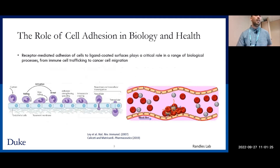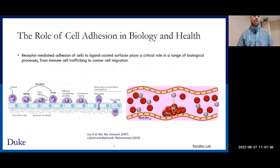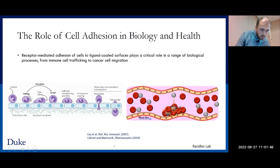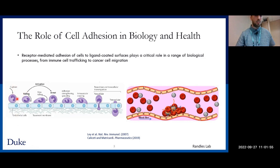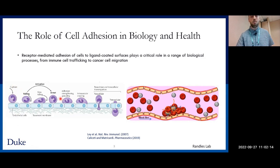Before I get into the meat of the presentation, I want to give a high level overview of some of the biological processes relevant to this work, mainly a process called cell adhesion. This is a process in which biological cells form mechanical connections with a substrate or surface. This single cell has proteins on its surface called ligands that interact with receptors expressed by the endothelium on the substrate. This process plays an important role in cells binding to other cells as well as parts of their environment.